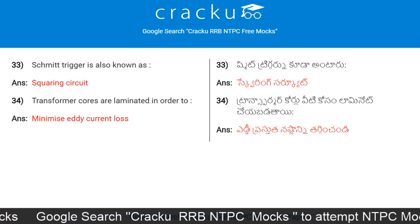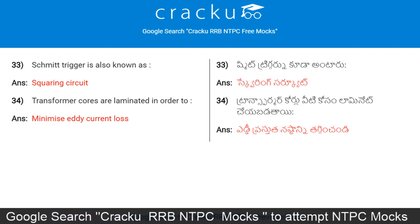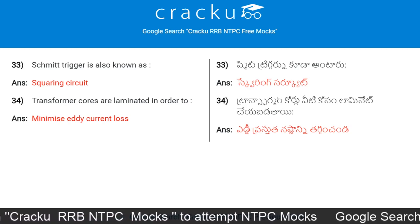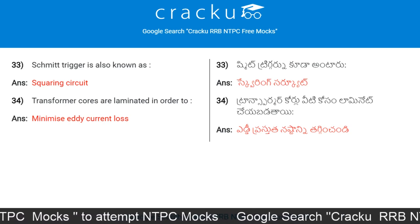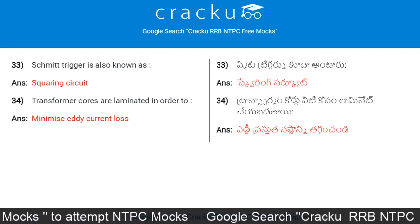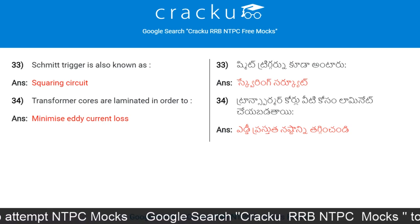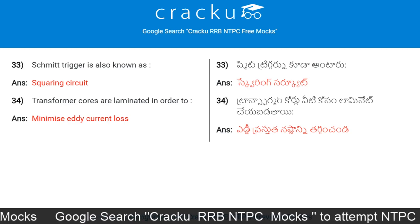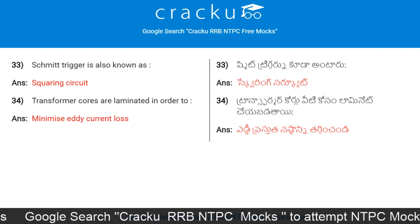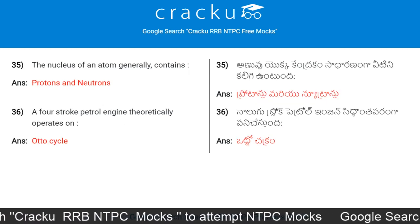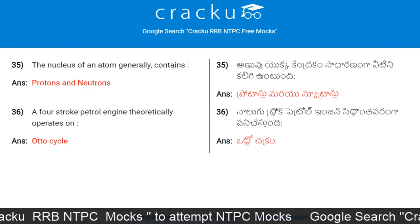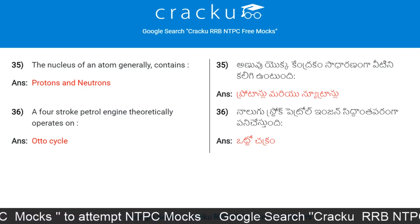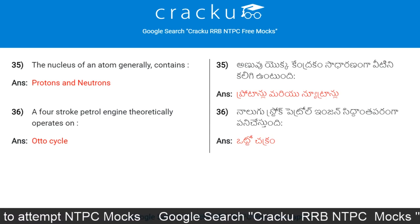Schmitt trigger is also known as a squaring circuit. Transformer cores are laminated in order to minimize eddy current loss. The nucleus of an atom generally contains protons and neutrons.